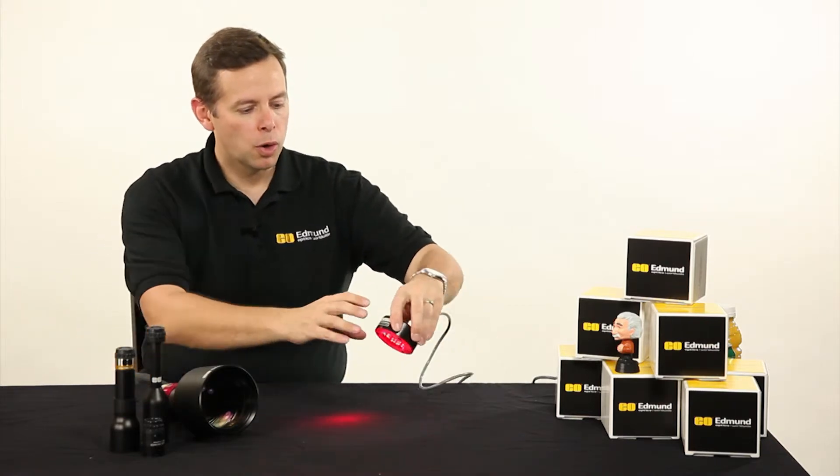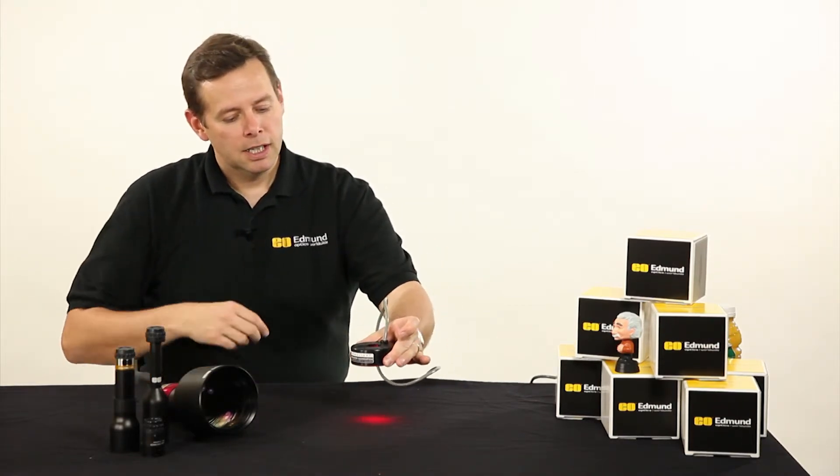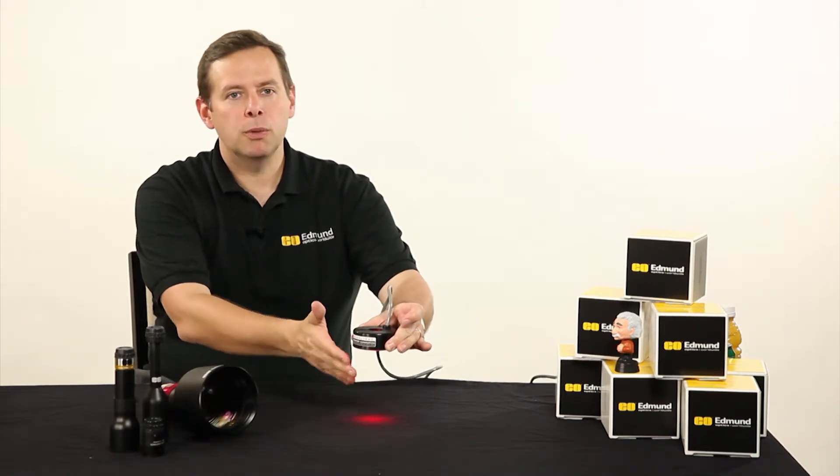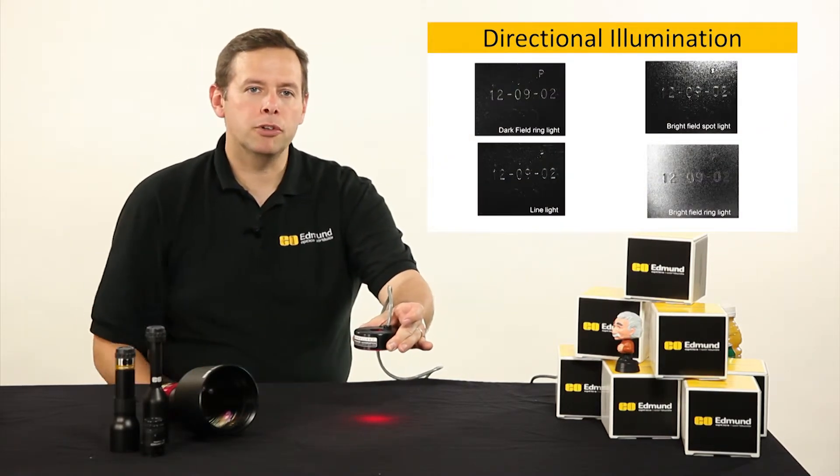That would be a bright field scenario for that lighting source. In this sort of scenario, this ring light being up this high where the lens would be put right behind it, we would have a bright field scenario for our object.